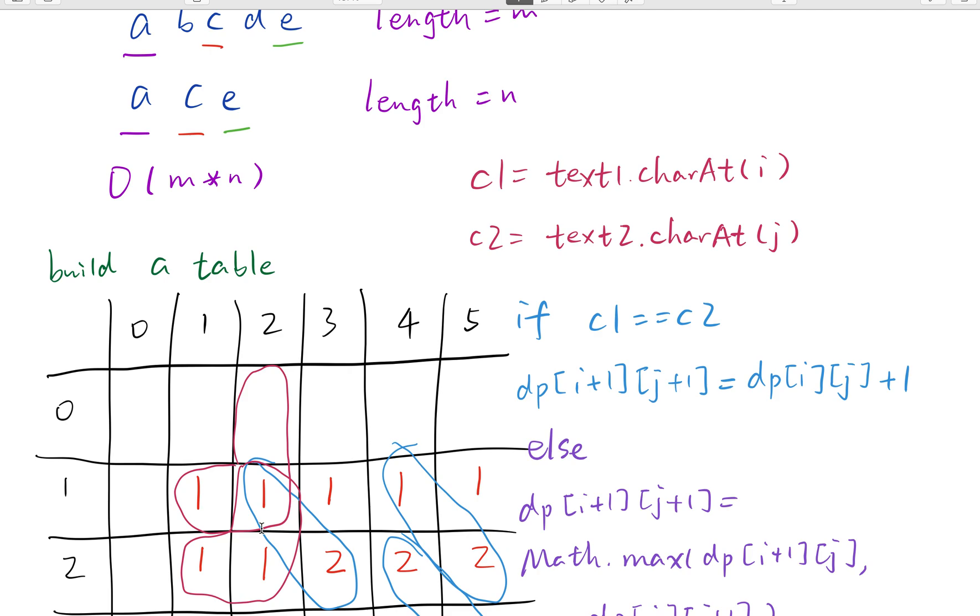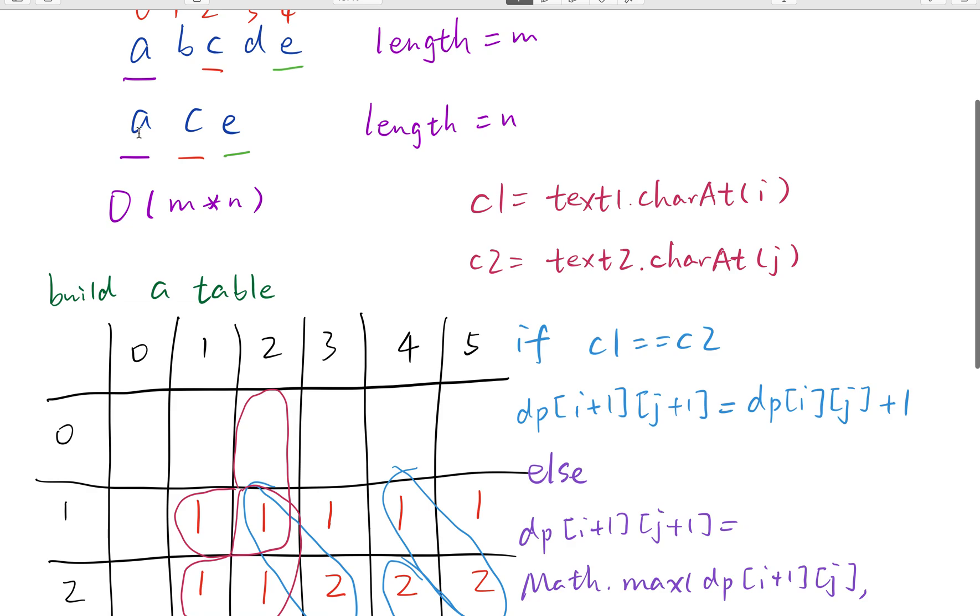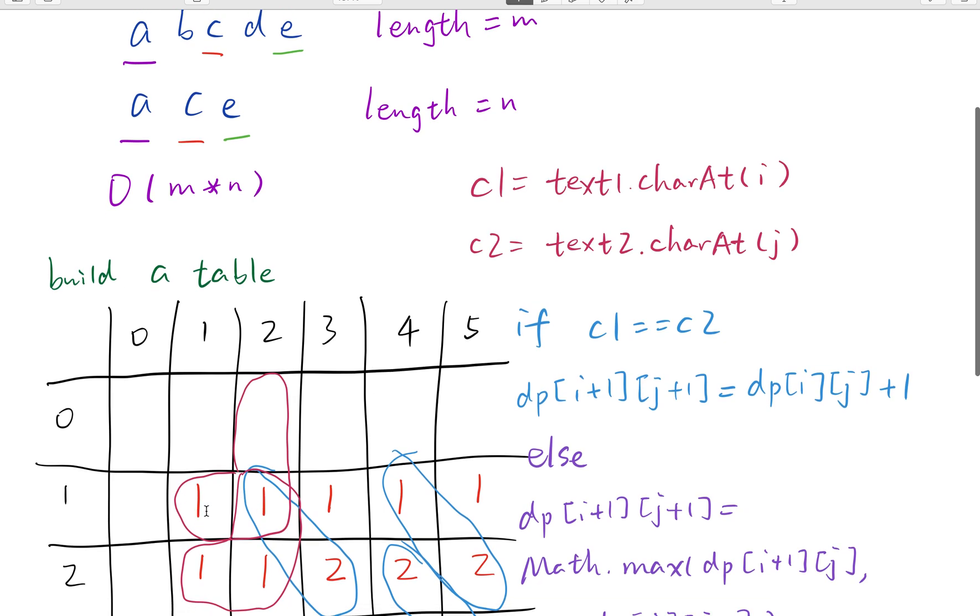So from these two examples you will see once currently the current two characters are not equal, we will get the maximum of its previous two values. What does that mean? When we have ab and a, b is not equal to a. But we know a equals a, so we should not fill up 0, we should fill up 1. Actually we use this 1.